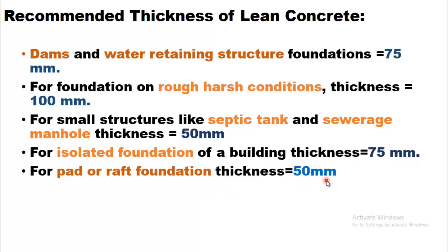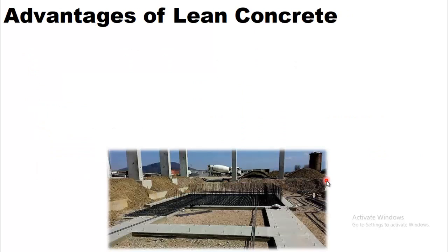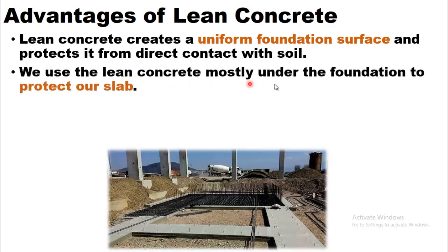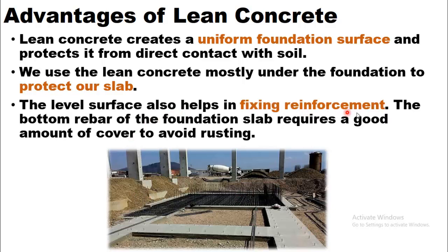Now, the advantages of lean concrete. Lean concrete creates a uniform foundation surface and protects it from direct contact with the soil. We use lean concrete mostly under foundations to protect the slab — as seen in the picture, lean concrete is provided underneath to avoid direct contact of steel with the soil. The level surface also helps in fixing reinforcement. The bottom rebar of a foundation slab requires a good amount of cover to avoid rusting, which is achieved by providing a gap between the steel and the soil, since soil contains moisture that causes rusting. Lean concrete protects the steel from rusting.